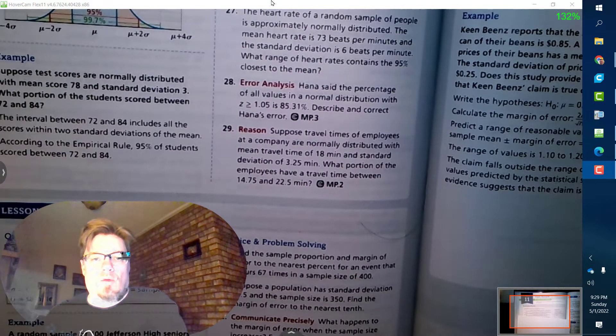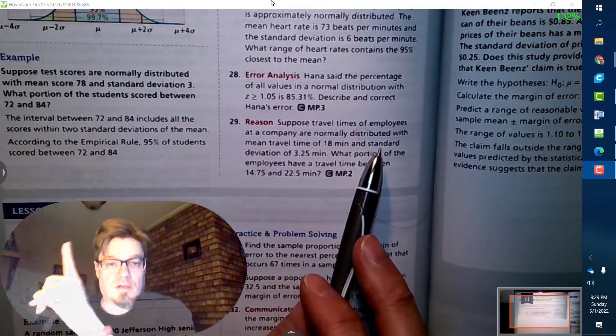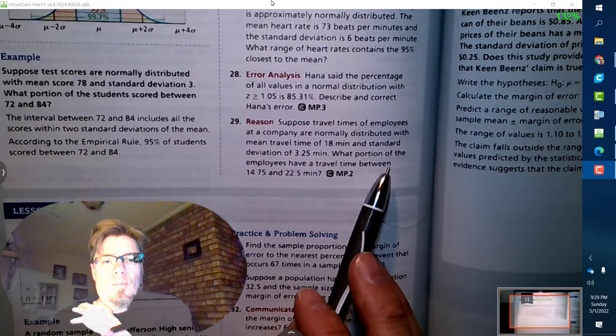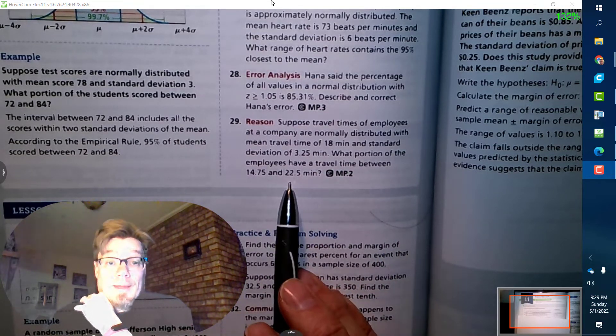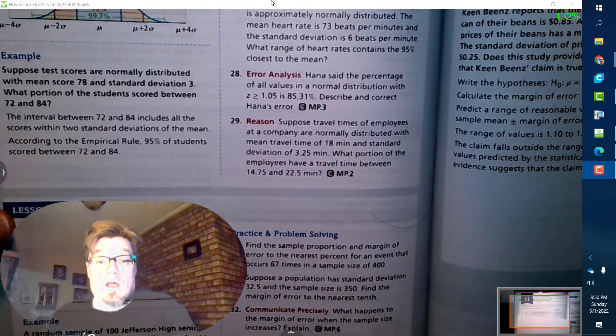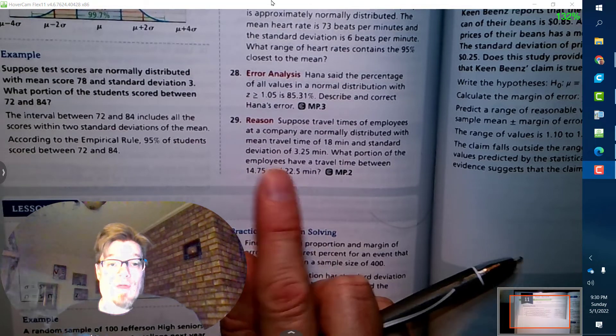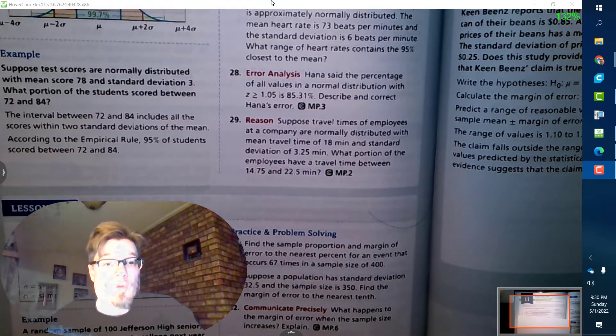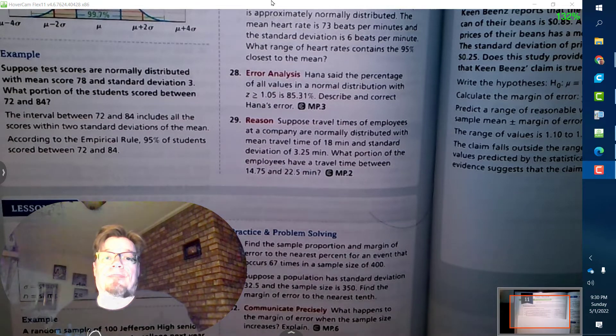So number 29, there will be a couple of these on the test. Suppose travel times of employees at a company are normally distributed with a mean travel time of 18 minutes and standard deviation of 3.25 minutes. What portion of the employees have a travel time between these two values? So what I'm going to do is, since this is normally distributed, I can actually find out how rare it is to get this one and how rare it is to get this one, and then where they overlap is that complete probability between both windows.